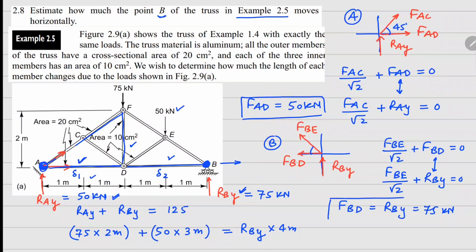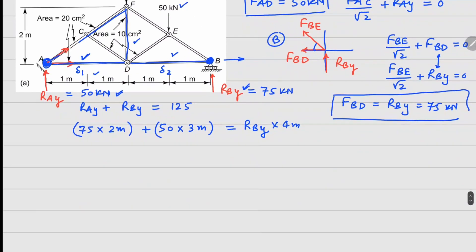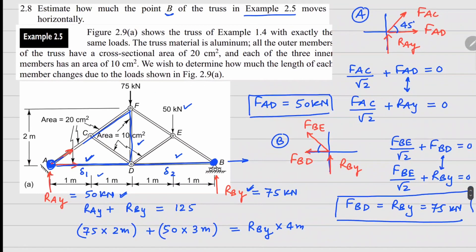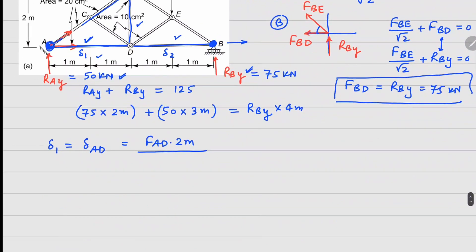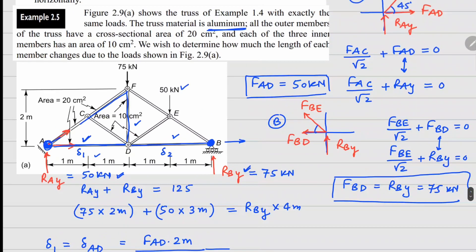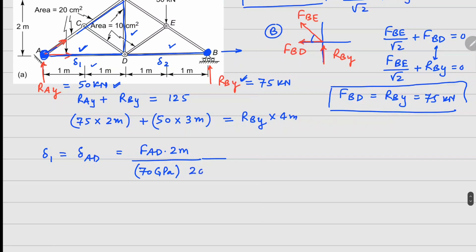Once we have the forces, we can calculate delta 1, which is delta in member AD, by doing FAD times length of AD (2 meters) divided by elastic modulus. The material given here is aluminum, so for aluminum you can take 70 GPa, and the cross-section area for the outer elements is 20 centimeter square.